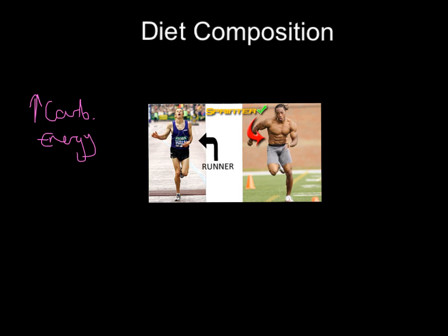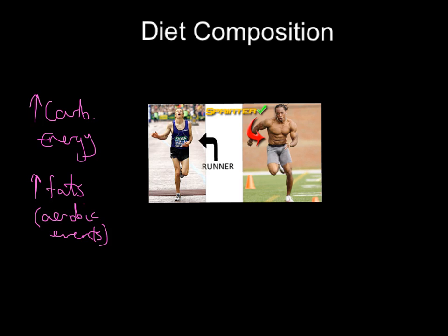They're also going to have slightly higher levels of fats compared to a normal person. Why? Because fat is an energy source, but it's an energy source for aerobic events — and that's what distance running is. Look at a distance runner — there's not an ounce of fat on them. Exactly. When you're doing miles and miles of running, they're burning all these fats off. But they're still eating them because fat is providing them with energy. They're not eating fat to get fat; they're eating fat to use it as an energy source.